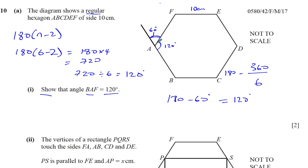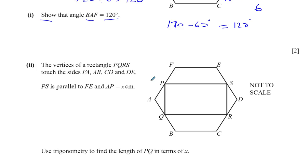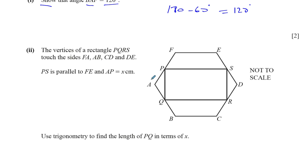Now part two: the vertices of a rectangle PQRS touch sides FA, AB, CD, and DE. PS is parallel to FE, and AP is equal to x centimeters. We need to use trigonometry to find the length of PQ in terms of x.